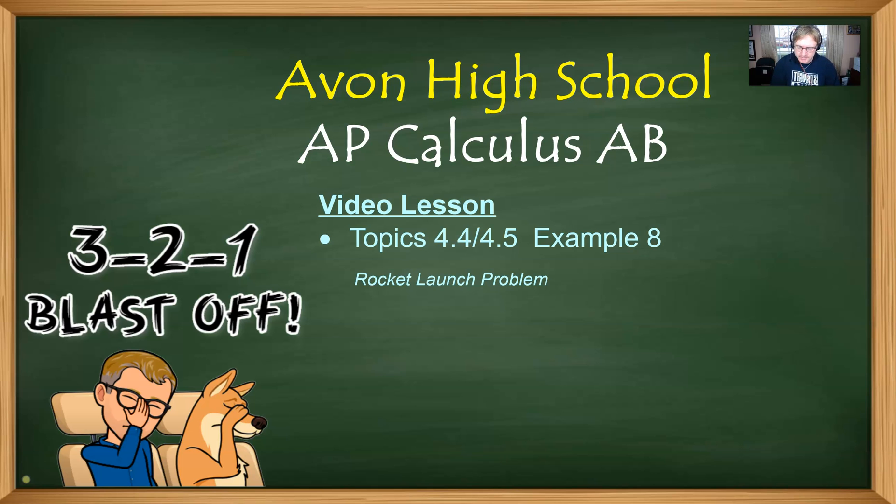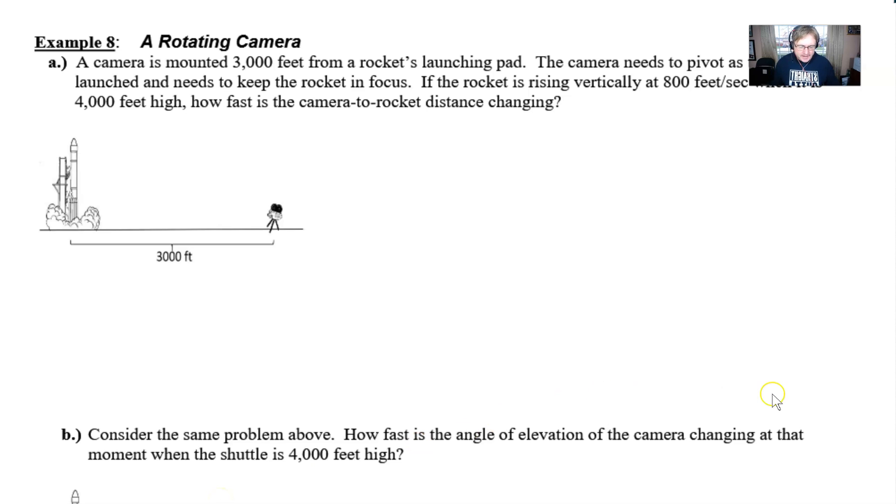It's a rocket launch problem. So 3, 2, 1, blast off. The problem reads: we've got a rotating camera that is mounted 3,000 feet from a rocket's launching pad. The camera needs to pivot as the rocket is launched and needs to keep the rocket in focus. If the rocket is rising vertically at 800 feet per second when it is 4,000 feet high, how fast is the camera to rocket distance changing?